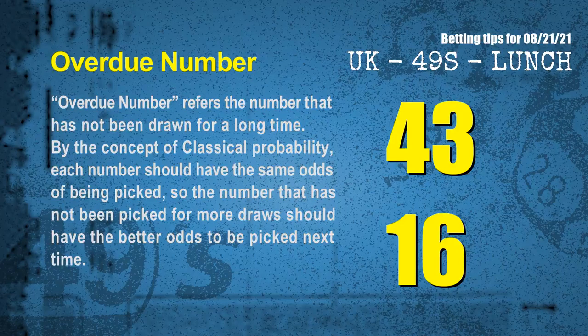The final information for you is overdue numbers. Overdue number refers to a number that has not been drawn for a long time. Also by the concept of classical probability, each number should have the same odds of being picked, so the number that has not been picked for more draws should have better odds to be picked next time. After counting thousands of results before, the most overdue two numbers are 43 and 16.